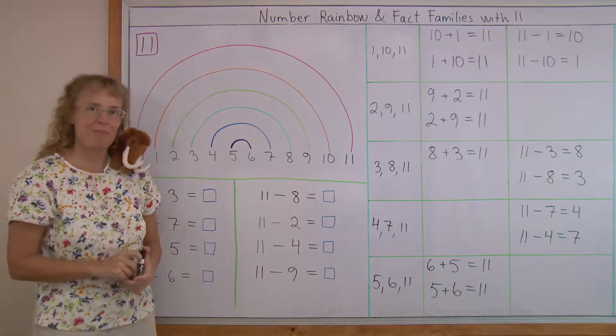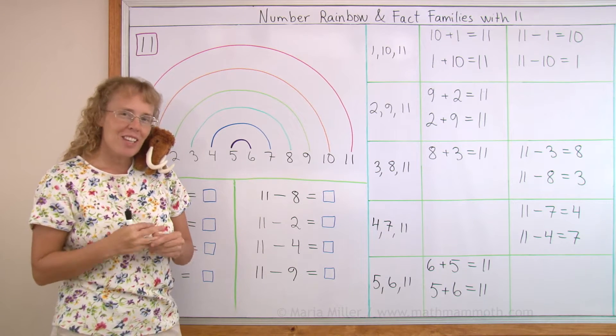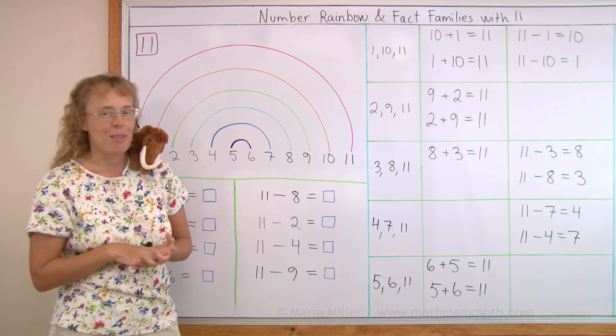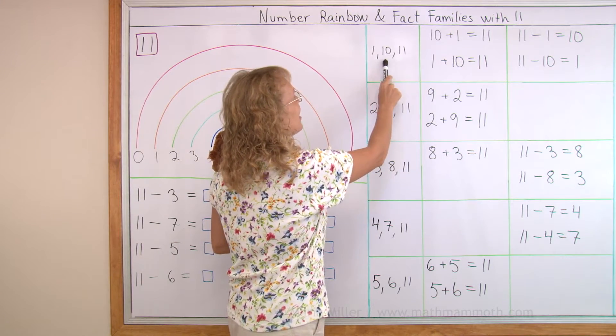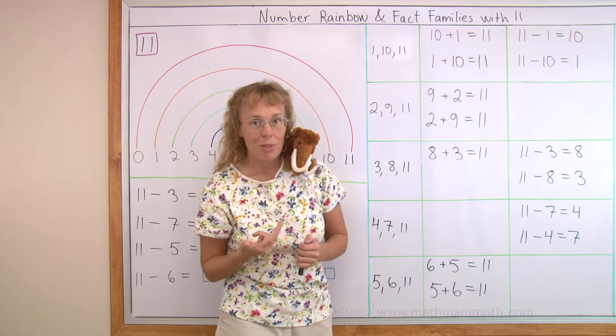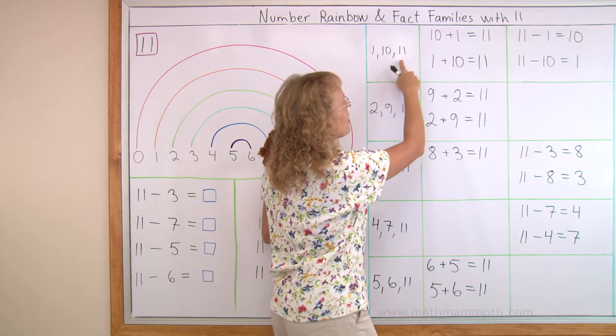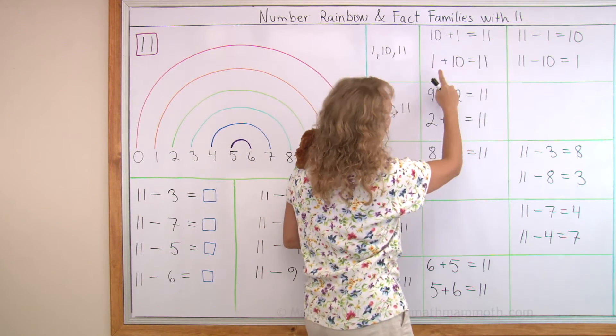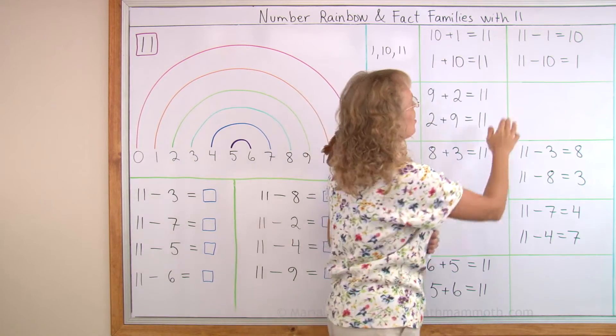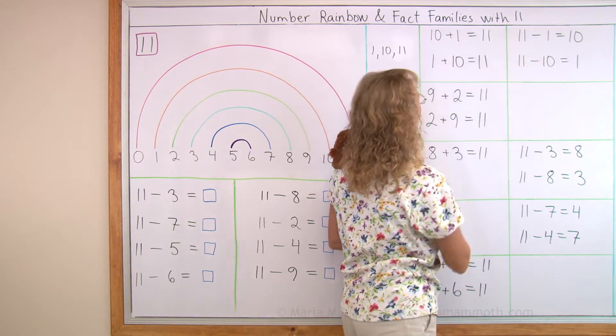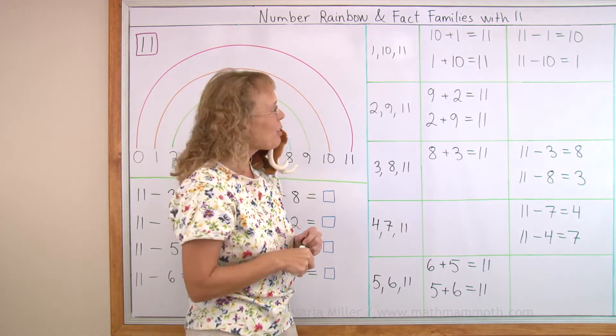All of those are sums of 11. Over here I wrote fact families with 11 because they also teach us basically the same thing. For example here I have 1 and 10 and 11. I'm using those three numbers to write a fact family. Because 1 and 10 make 11, right? 10 plus 1 is 11. 1 plus 10 is 11. And then we have the two subtractions that go with the same fact family. Over here some of those are missing so let's fill those in for now.